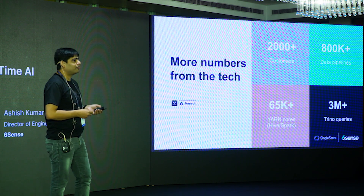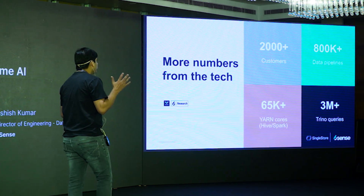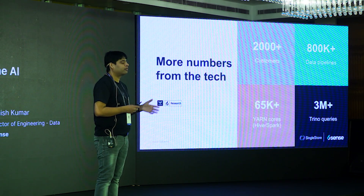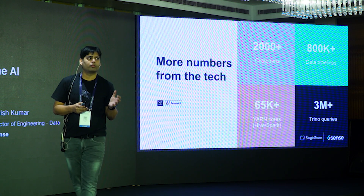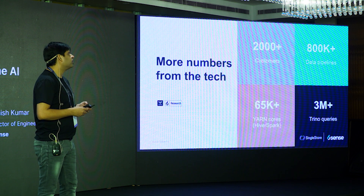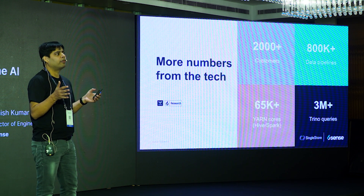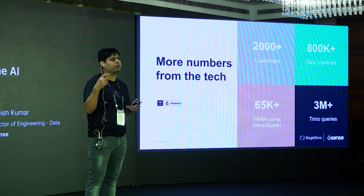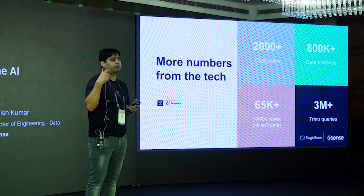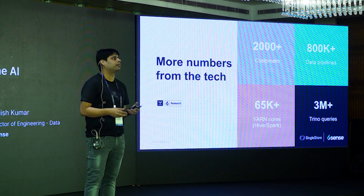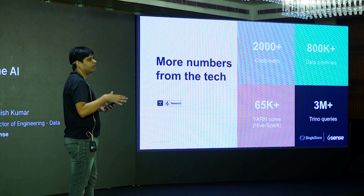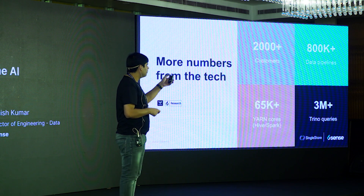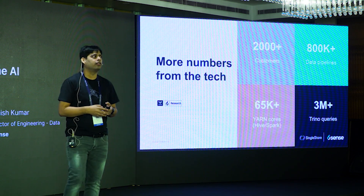We receive data from customers and partners — we have around 2,000-plus customers worldwide and process their data in our data platform, which serves around millions of data pipelines every day. One data pipeline can be a combination of multiple jobs and queries — Spark, Trino, SingleStore, Java code, or Python scripts. We run around 60 to 70,000 cores at peak, which is very large. For ad hoc queries using Trino, our federated query engine, we run around 3 million-plus queries in a day.